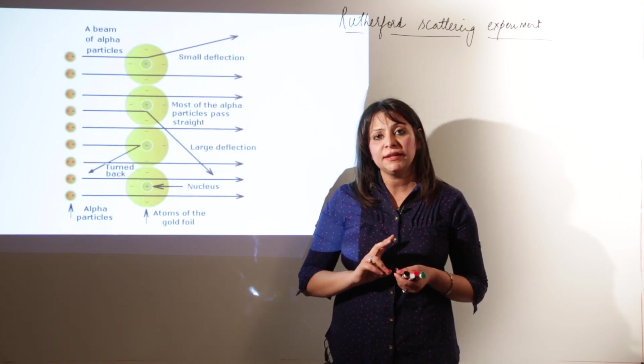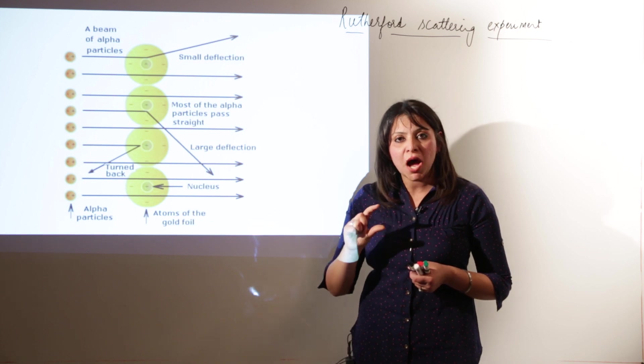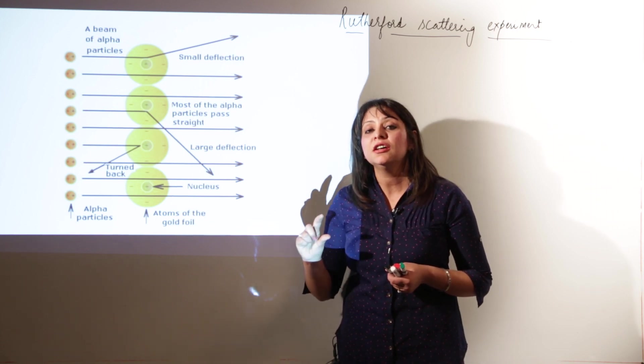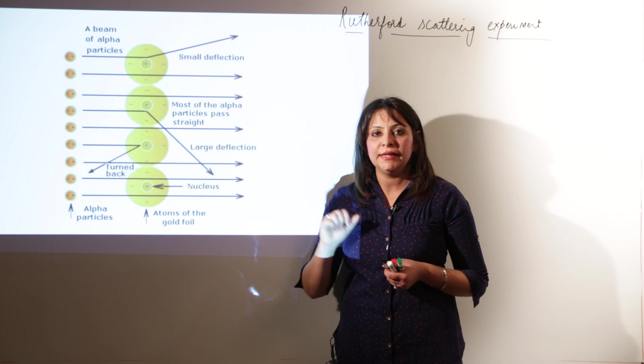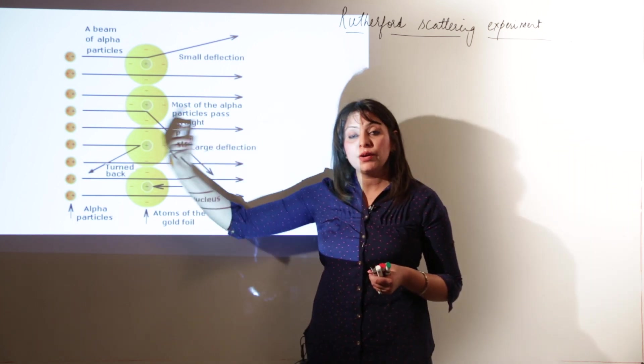So he made the conclusion. According to him, the small dense mass is located in the center that is called the nucleus. The third observation was that few rays retrace their path.